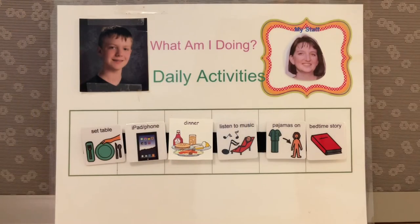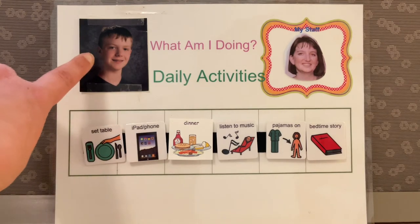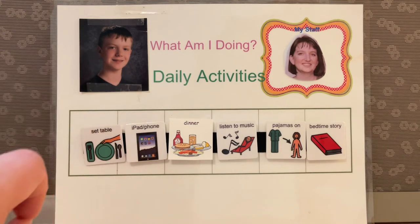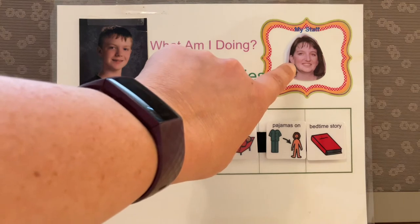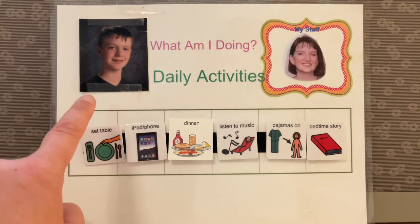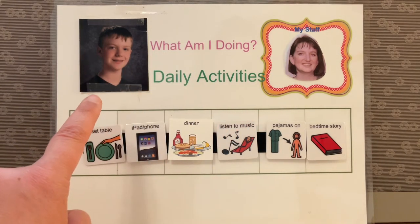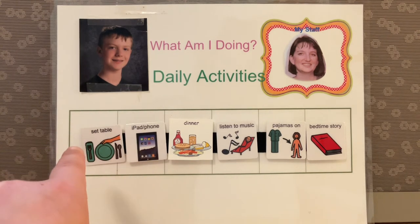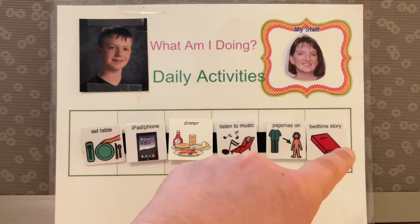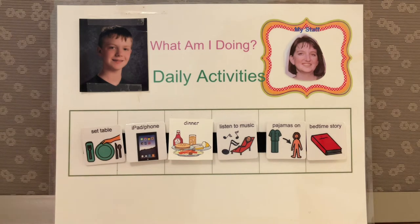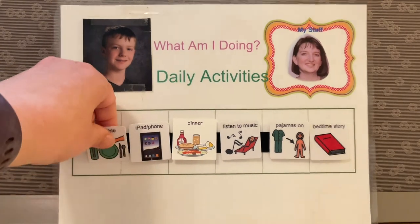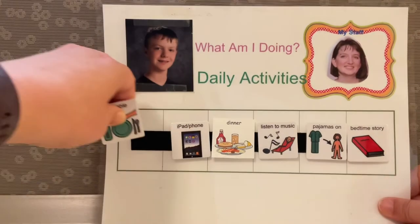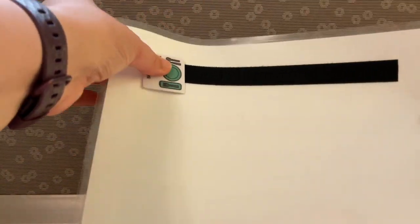In this example of a schedule, we have a picture of the person the schedule is for, and then we also have a picture of the staff member that's supporting that person today — so that's a nice little visual orientation. Here you can see we have a horizontal schedule for what's happening for the evening. When 'set table' is done, it can be taken off. I like to have Velcro on the back because that's where the pieces go, so I can use them and find them again.